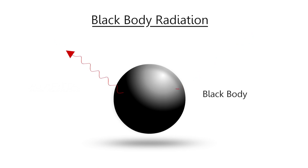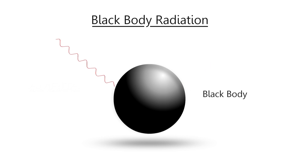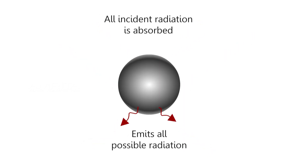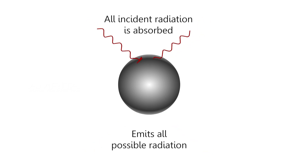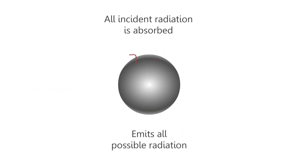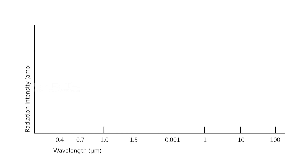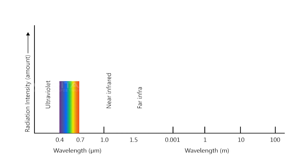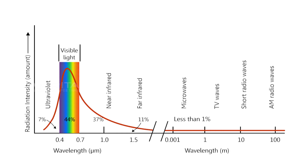A black body, or ideal radiator, is a body that emits and absorbs at any temperature for a given wavelength. A black body exhibits the following features: it emits more radiation energy than a real surface at a specified temperature and wavelength, absorbs all incident radiation regardless of wavelength and direction, and emits radiation energy uniformly in all directions.